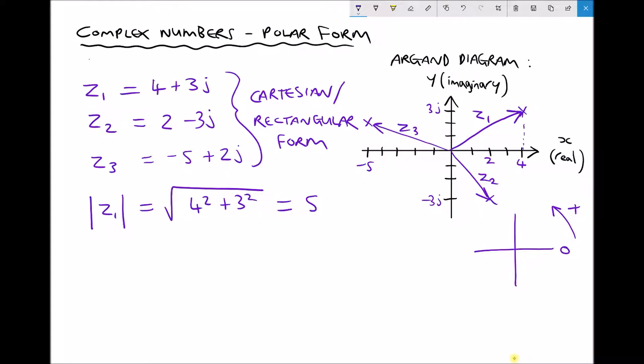Next we can find the argument, and the argument is going to be the angle here on our argand diagram. If we refer to our convention we can see that's going to be positive. We can use trigonometry here because tan theta equals opposite over adjacent. Looking at that triangle, we write arg Z1 equals tan to the minus 1, opposite is 3j or on our argand diagram just 3, divided by 4, giving us an angle in degrees equal to 36.9 to one decimal place.